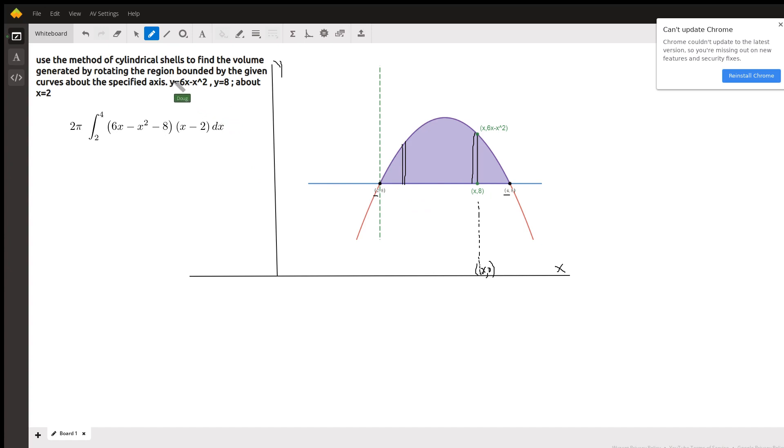Now where did all this come from? Cylindrical shell method is 2π times the definite integral from a to b, in our case 2 to 4, of the height of the shell times the average radius of the shell.